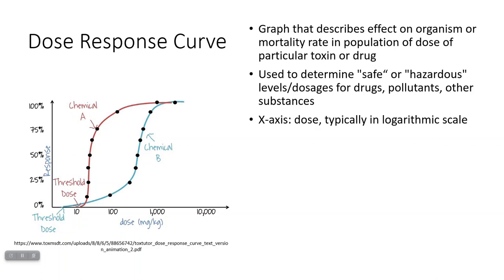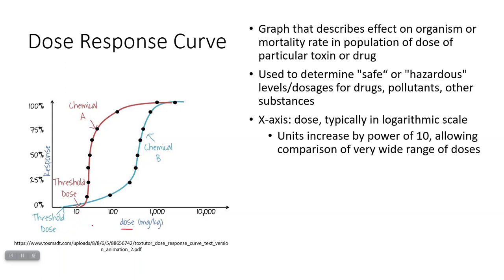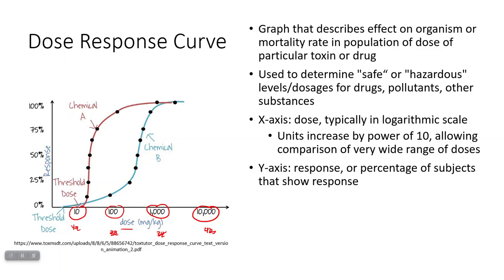On the x-axis you'll typically have the dose, and a lot of times it's on a logarithmic scale — meaning instead of adding the same number each unit, you're multiplying by 10 each time. So the scale goes 10, 100, 1,000, 10,000, which lets you look at a very wide range of doses on the same graph. The y-axis shows your response, or the percentage of subjects that show that response — or if you're finding an LD50, it would be the percent mortality.